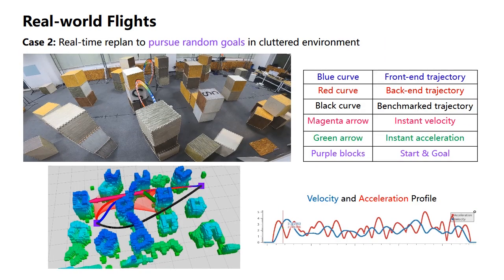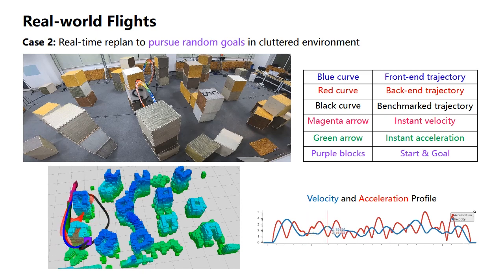In the second case, we test the real-time replan capability in the cluttered environment where there are only two circles to travel through in the middle.